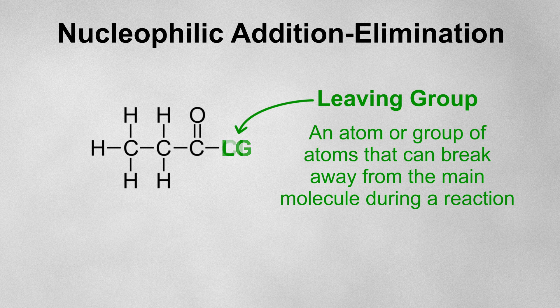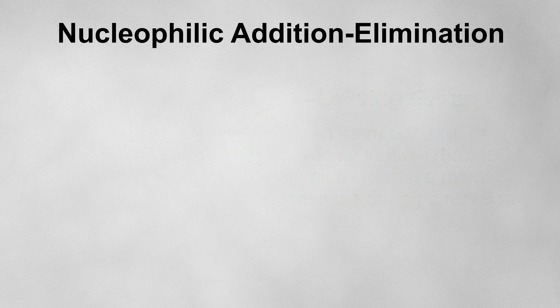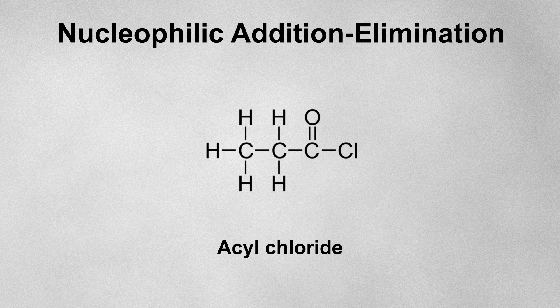A good example of a leaving group is a halogen or a protonated hydroxy group. So a molecule where you're likely to see nucleophilic addition-elimination is an acyl chloride. This molecule is similar to a carboxylic acid, but we've just swapped the OH group for a chlorine atom.